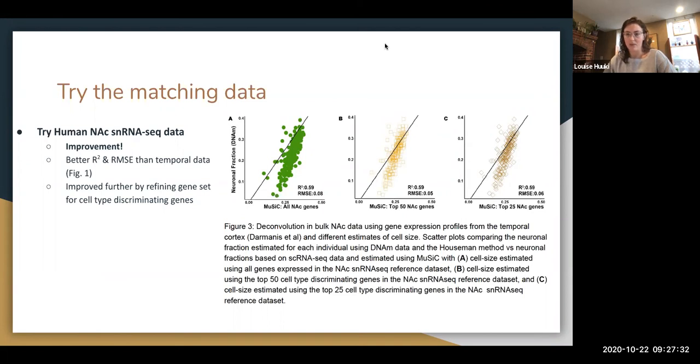And they improved further by refining the gene set to the genes that are most helpful in differentiating cell types. So all genes and then we tighten up what genes we use and we see an improvement in R squared. So that was kind of the overall takeaway from the paper was, using the most correct data to estimate parameters is going to give you the best results.